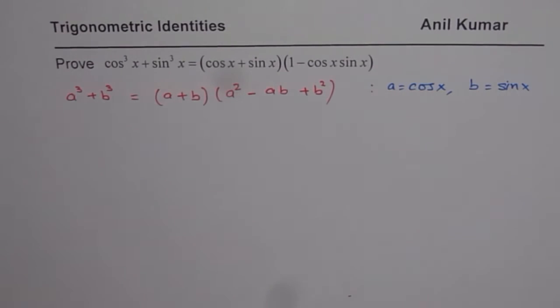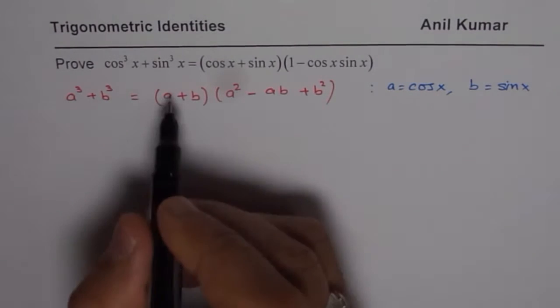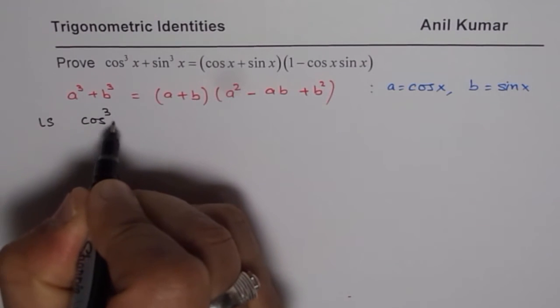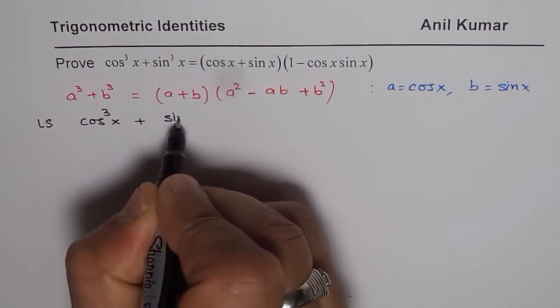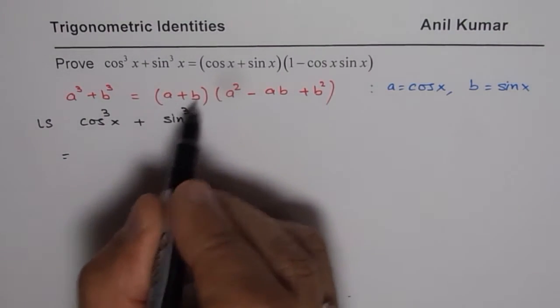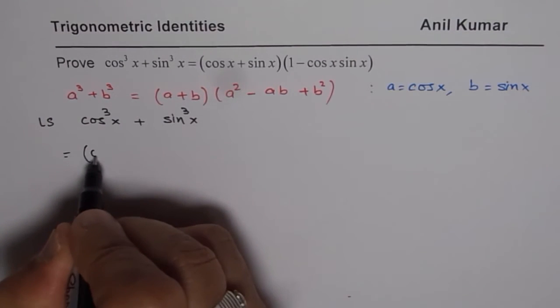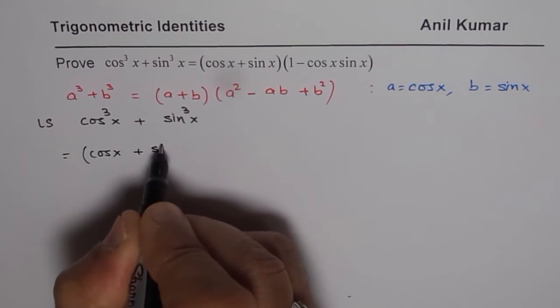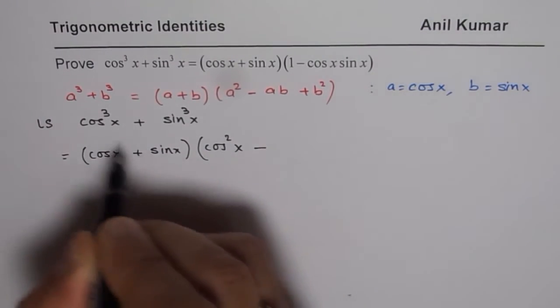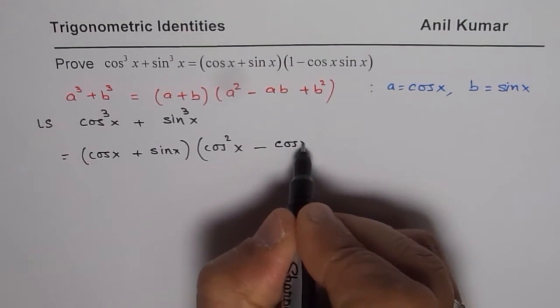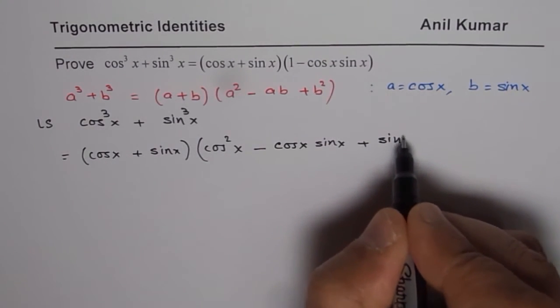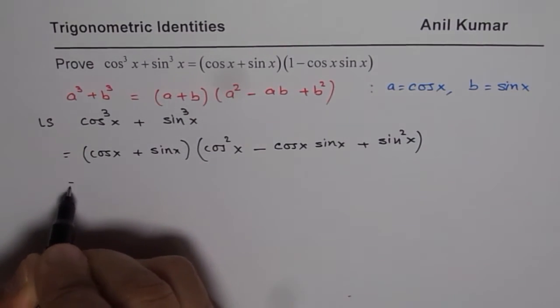So let us begin with the left side, expand or factor and then simplify. The left side given to us is cos³x + sin³x which we can factor and write in this form. So a + b means cosx + sinx. We have (cosx + sinx) times a² which means cos²x - ab means cosxsinx + b² which is sin²x. So that is what we get from the left side.